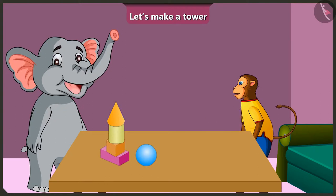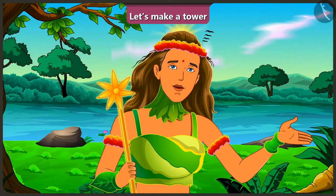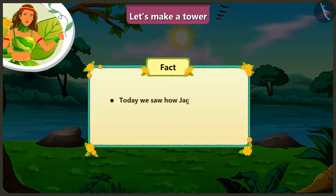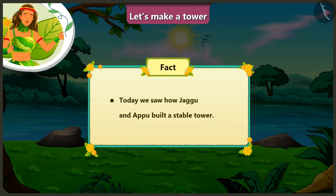Now I will make it again. This cuboid at the bottom, above it the cube, above it this cylinder, and above it this cone shape. See, the tower is made! Now I understood that we cannot make a tower using round objects, and that cone shaped objects should only be placed on top of the tower.